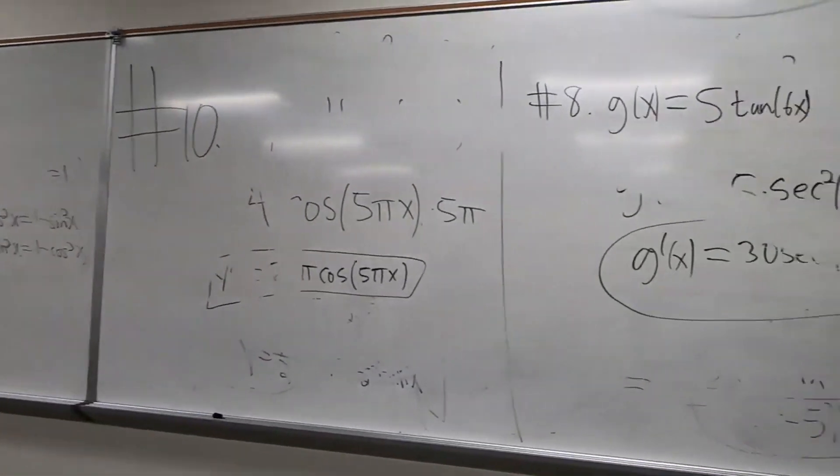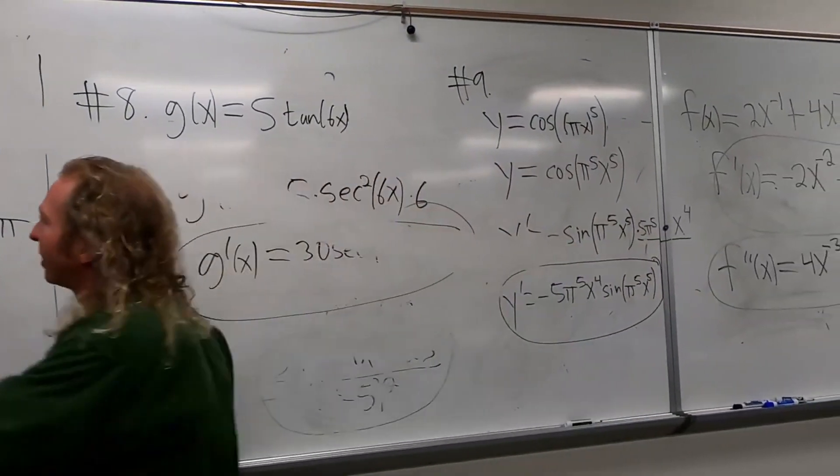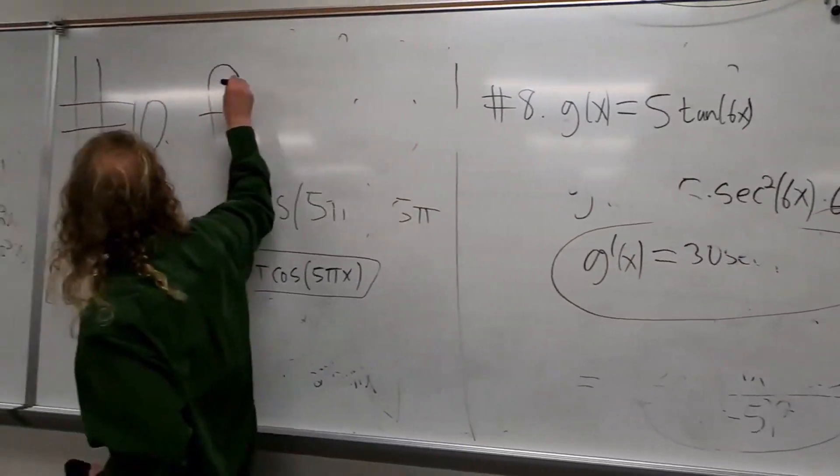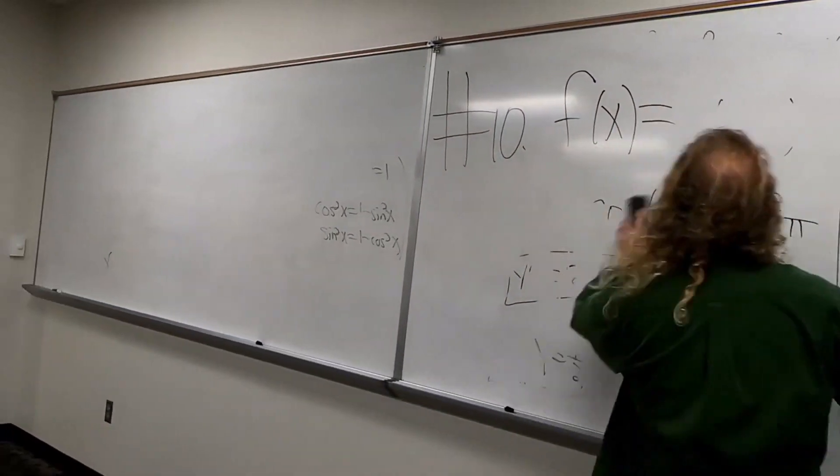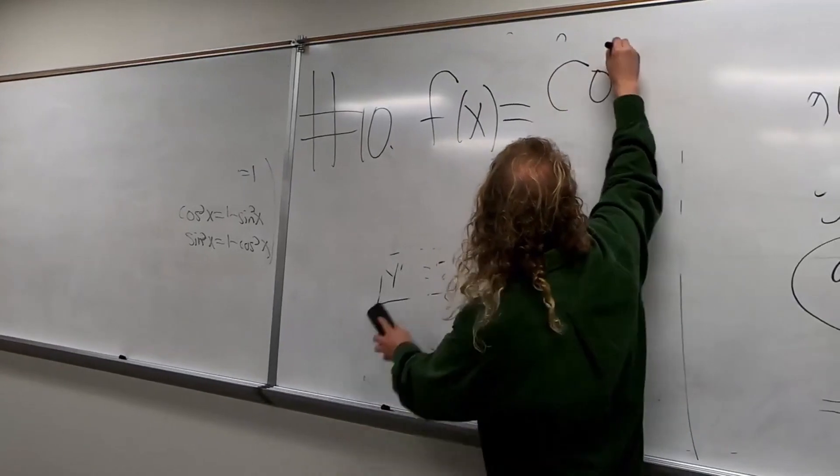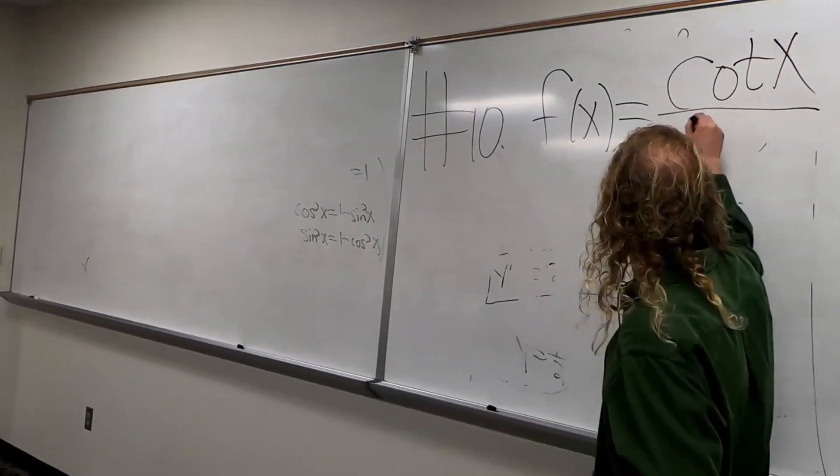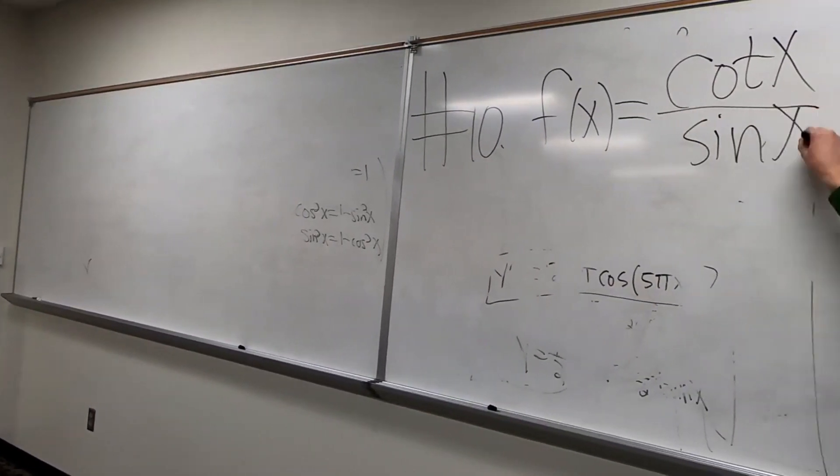So it's f of x equals cotangent of x over sine of x. So cot x, that's not cot x, why am I writing so big? Over sine x.